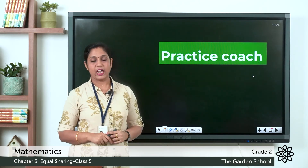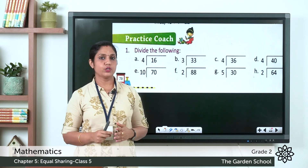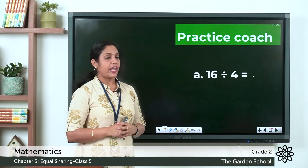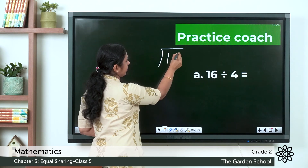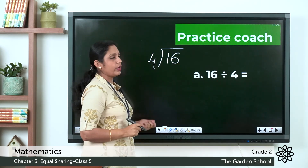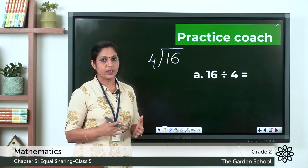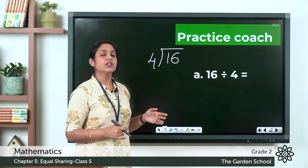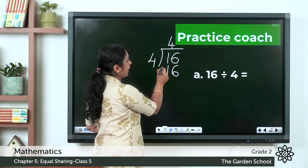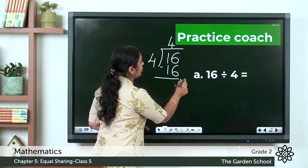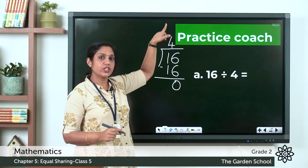In your textbook we have the practice on page 70 with some sums. Let's do one or two and the rest you can do as homework. Problem A: 16 divided by 4. Write 16 and 4 in the division bracket. We know that 4 fours are 16, so we can write the answer directly. Write 4 on top, 16 below, then subtract 16 minus 16 equals 0. The answer is 16 divided by 4 equals 4. Remember the quotient is always written on top.